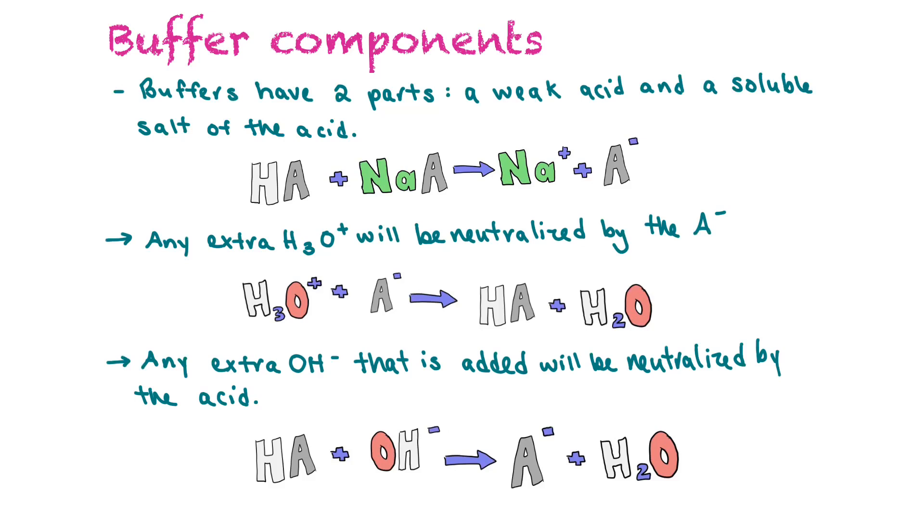Any extra acid would be neutralized by that anion. So H3O⁺ plus A⁻ makes more of the acid plus water. And then any extra hydroxide that's added would be neutralized by the acid. So the acid mixing with the hydroxide will make the anion plus water.